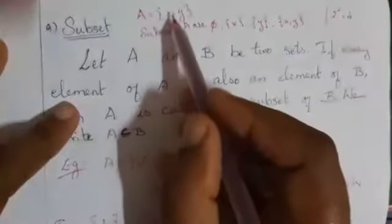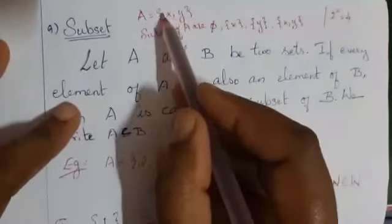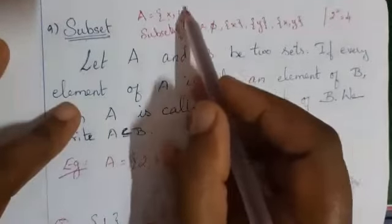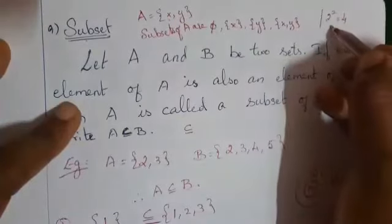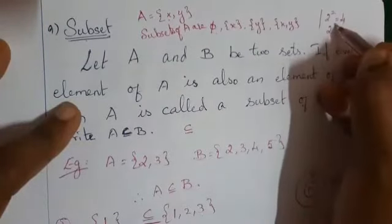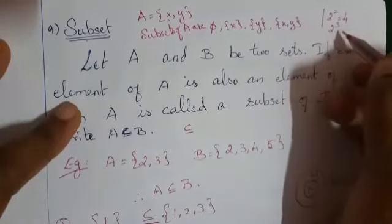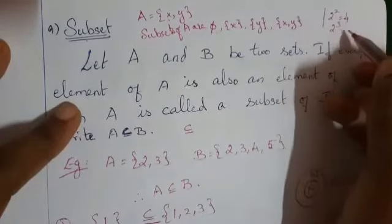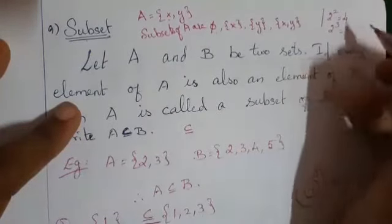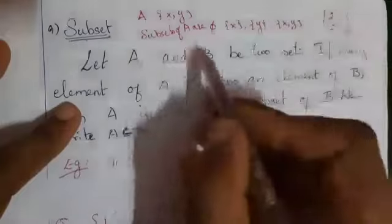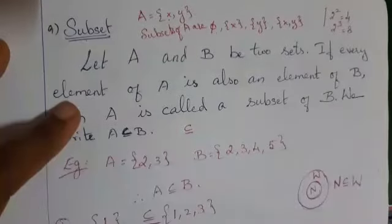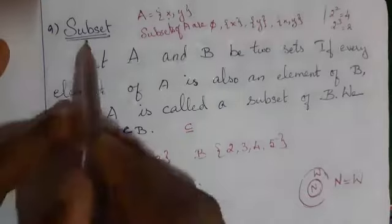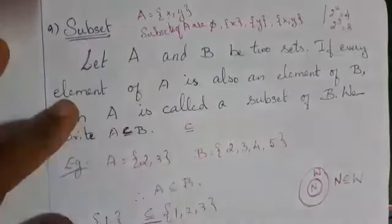If you have 3 elements inside the set, you have the formula 2 power 3, that is 2 twos are 4, 4 twos are 8. Therefore, how many subsets are there? 8 subsets. That also you must know for subsets.